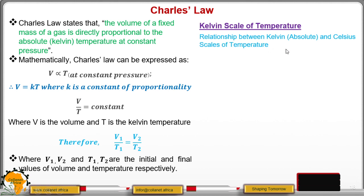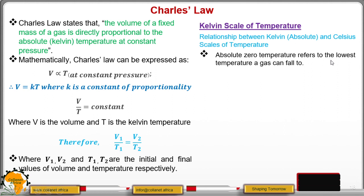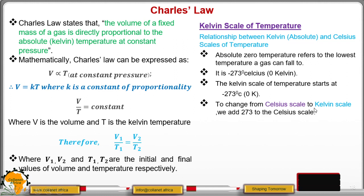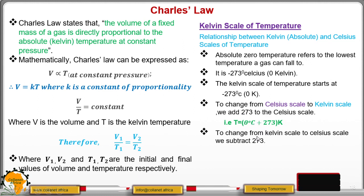We can now look at the Kelvin scale of temperature and the relationship between Kelvin and Celsius scales. Absolute zero temperature refers to the lowest temperature a gas can fall to, and the value is negative 273 degrees Celsius, which is equivalent to zero Kelvin. So zero Kelvin equals negative 273 degrees Celsius. This means the Kelvin scale starts at negative 273 degrees Celsius. Therefore, to change from Celsius to Kelvin, we add 273: temperature in Kelvin equals theta in degrees Celsius plus 273.